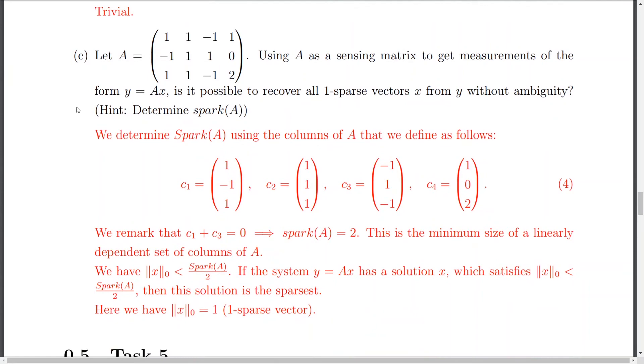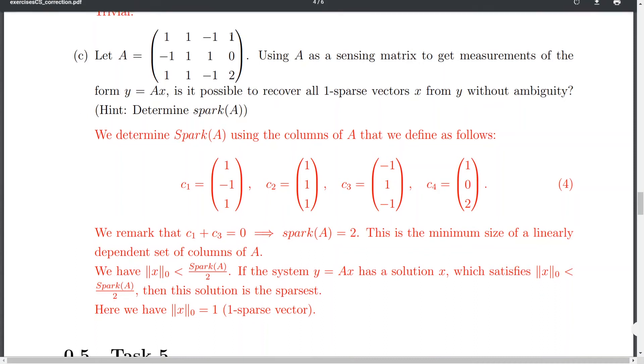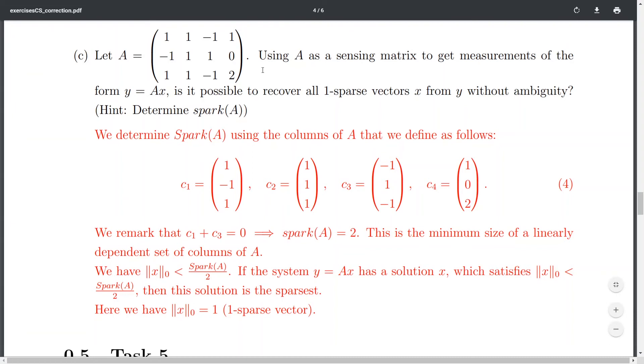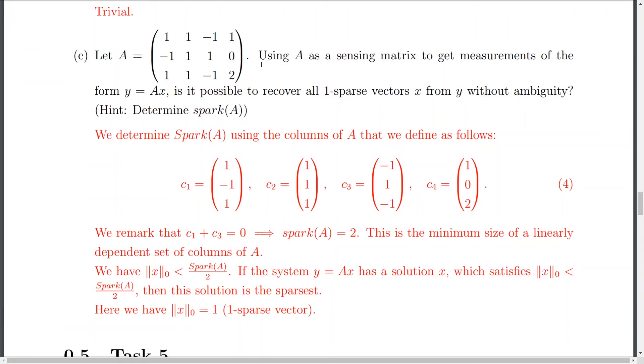Okay. So, now the final question for this task. Let A, this matrix, which is a 4 by 3 matrix. So, using A as a sensing matrix to get measurements of the form y equals A x, is it possible to recover all one sparse vectors x from y without like having an ambiguity or means like I'm having two solutions. Let's see, like one solution mapping to the two different possibilities or so. So, I have to make sure that the solution is somehow unique.